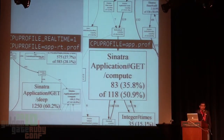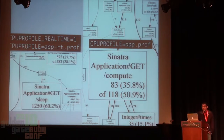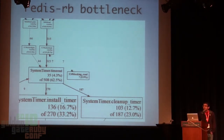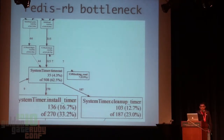Say you have this simple Sinatra application with two routes — one which is compute-heavy, so it computes the Fibonacci sequence for the first 10,000 numbers, and one that's sleep-heavy. You can profile this and end up with graphs. You can run PerfTools.rb in two different modes: CPU mode or real-time mode. In CPU mode, the compute action shows up at the top because it's using a lot of CPU cycles. But if you run it in real-time mode, sleep shows up at the top because it takes longer, even though it's not using as much CPU.